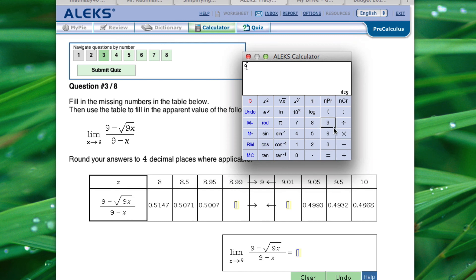So 9 minus the square root of 9 times 8.99. We're going to highlight all of that and divide by 9 minus 8.99 and that is going to give us 0.5001. And we're going to clear that and then do the same thing for 9.01. And that's going to give us 0.4999.